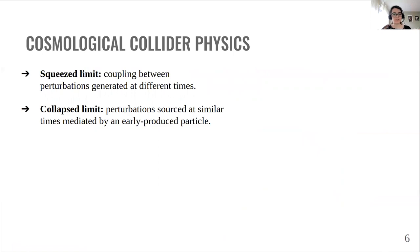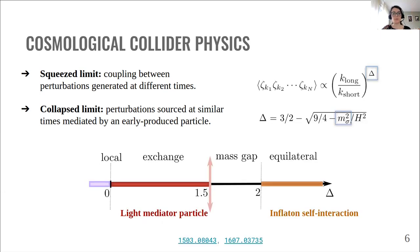Here we focus on two kinematical limits of the correlators. The squeeze limit, where a particle mediates interactions between perturbations generated at different times, in other words, with different wavelengths. We also consider the collapse limit, where perturbations sourced at similar times are coupled by a mediator, which is produced earlier during inflation. Now, in these limits, the correlation functions exhibit a scaling which is controlled by the mass of the mediator, as you can see from the formula. So this guy here, delta, is a function of the mass of sigma, which is our mediator. Therefore, a measurement of delta provides spectroscopic information about the initial conditions.